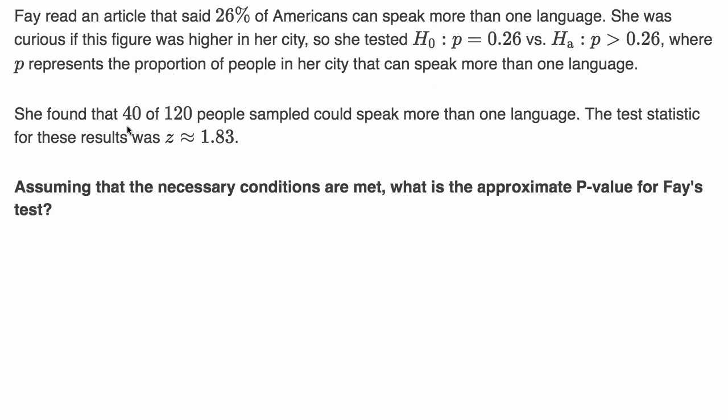She found that 40 of 120 people sampled could speak more than one language. So what's going on is, here's the population of her city. She took a sample. Her sample size is 120. And then she calculates her sample proportion.